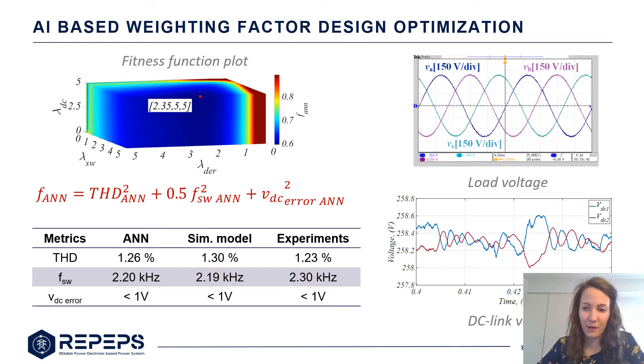I can show now an example on an MPC converter. We define the following fitness function using the performance metrics and we will obtain the fitness function plot. The optimum weighting factors are shown here. We have checked them in the simulation model with our weighting factors and also we implemented them in our experimental setup and you can observe the results over here.